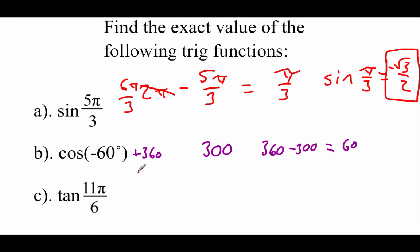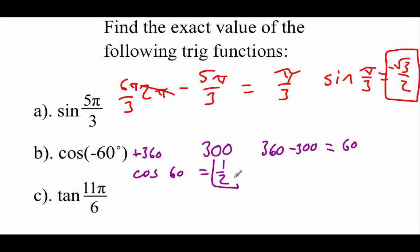Now doing the cosine of 60 — well, 60 is the same thing as π over 3. The x value there is 1/2. This original angle is a fourth quadrant angle, this 300, and cosines are positive in the fourth quadrant, so I'm just going to leave 1/2 as my answer.